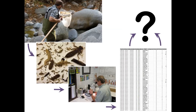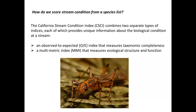So we've talked about how we sample a stream for BMIs, how that sample gets processed in the lab, and how reference sites define expected conditions. The question is how do we actually score stream condition from a species list? The answer is the California Stream Condition Index, or CSCI, which combines two separate types of indices: an observed-to-expected, or O-to-E, index that measures taxonomic completeness, and a multi-metric index, or MMI, that measures ecological structure and function.